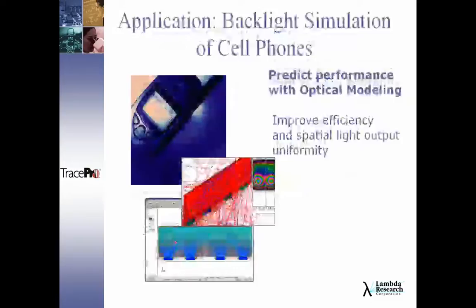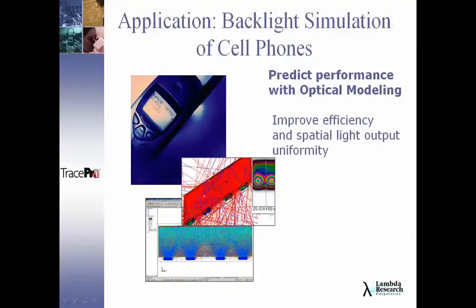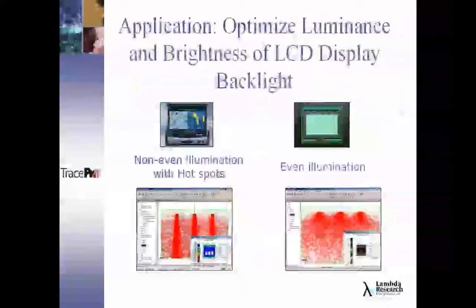Other applications include backlight simulation for cell phones. You can model the entire assembly — the LEDs, scattering dots on the back, and the panel — and see the light pattern and uniformity, and even watch rays trace through the system to improve efficiency and spatial light output. One of our customers is Garmin, which creates GPS systems for routing cars and trucks, and uses TracePro for backlight design.